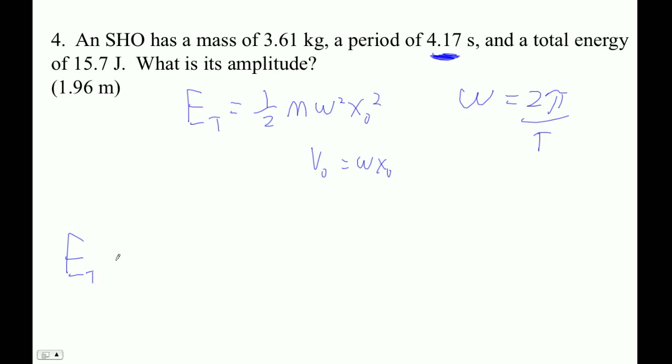So our total energy is one-half times the mass, which is 3.61 kilograms, and then omega is 2 pi over 4.17, and that's squared.